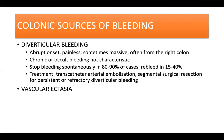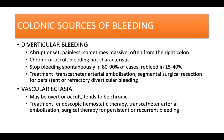Bleeding from colonic vascular ectasias may be overt or occult and tends to be chronic and only occasionally is hemodynamically significant. Treatment includes endoscopic hemostatic therapy and trans-catheter arterial embolization. Surgical therapy is generally required for major, persistent, or recurrent bleeding from colonic sources that cannot be treated medically, endoscopically, or angiographically.